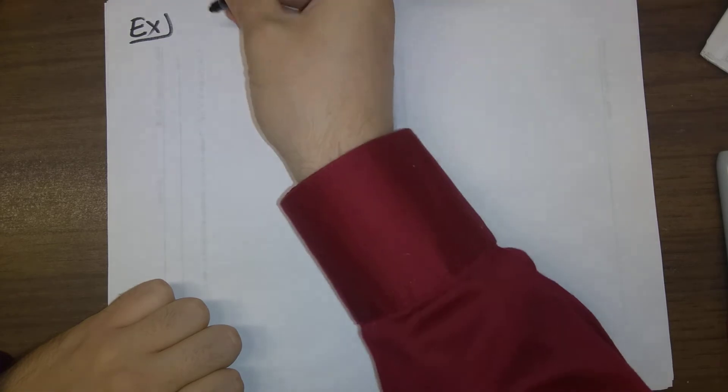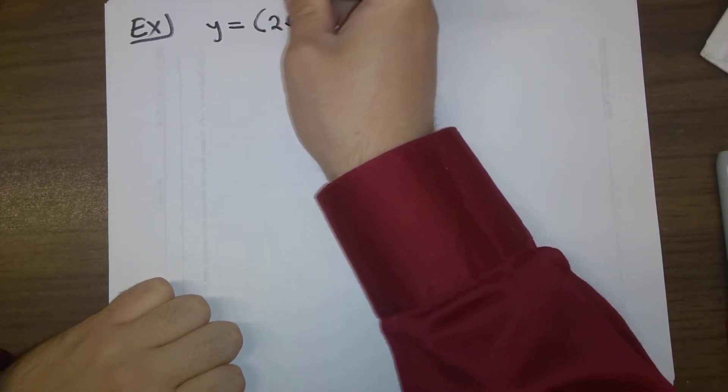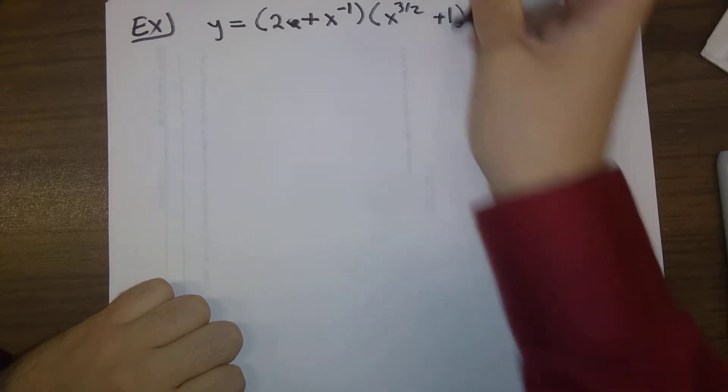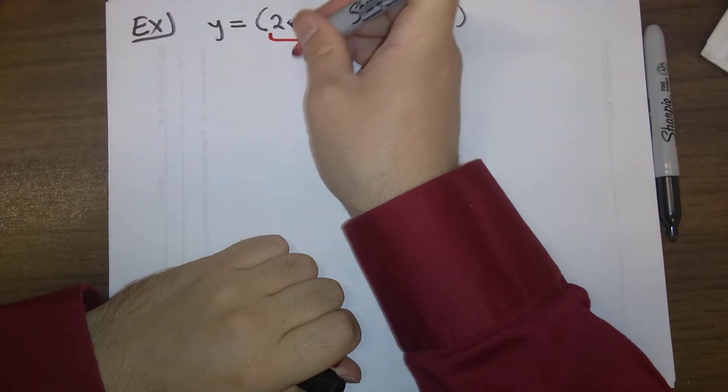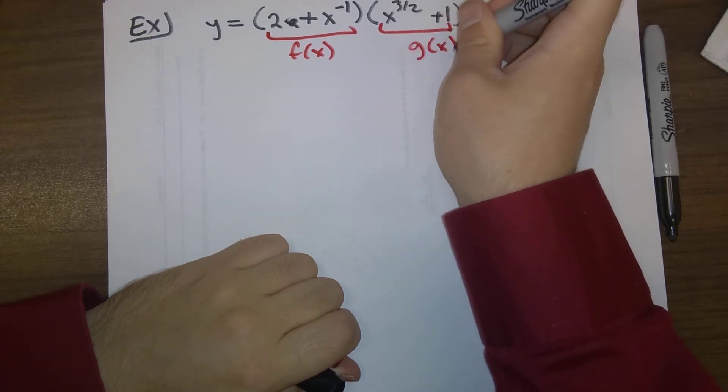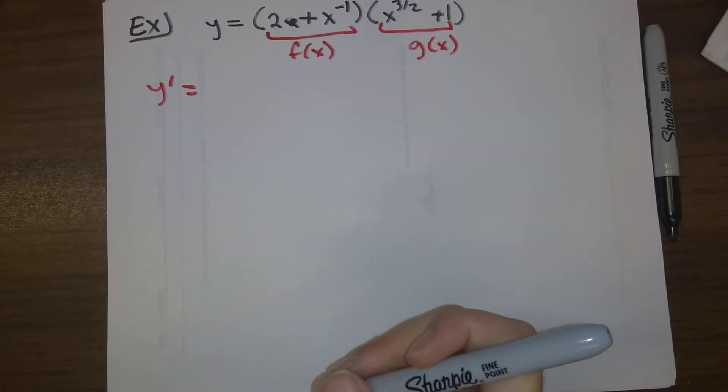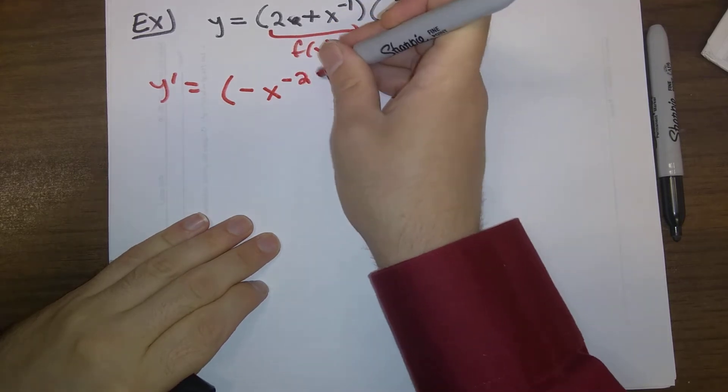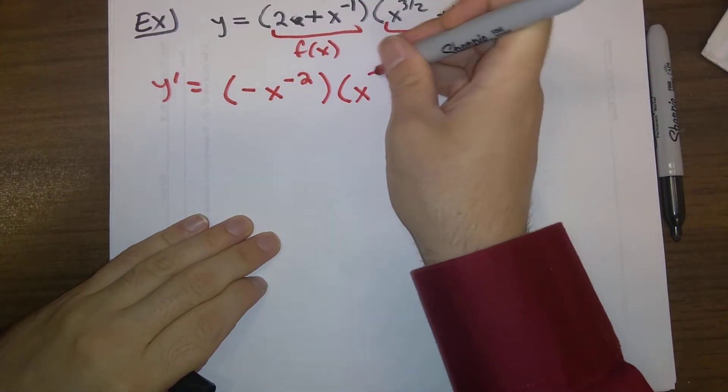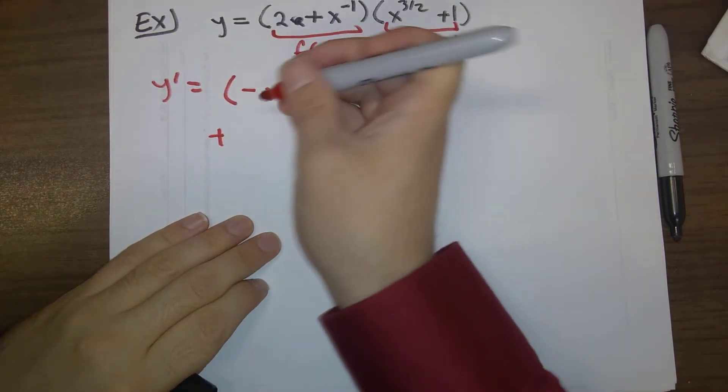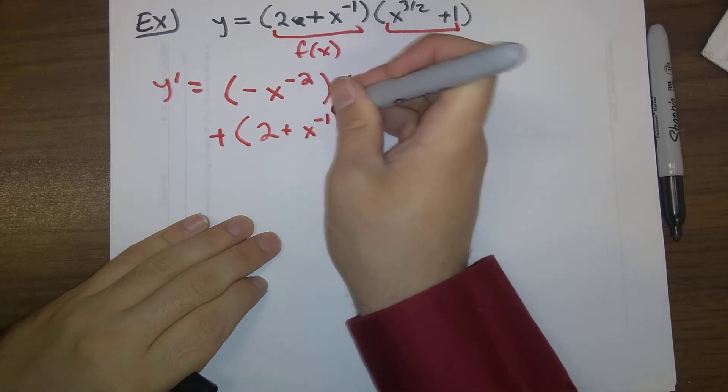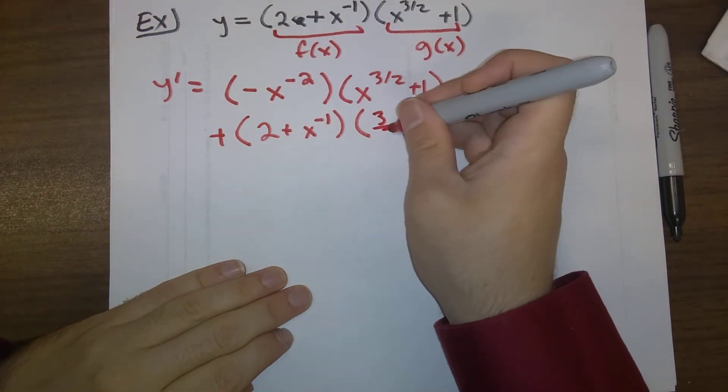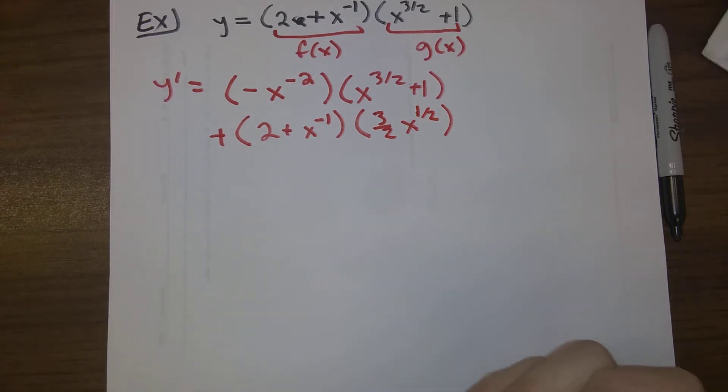Suppose that we have y equals (2 + x^(-1)) times (x^(3/2) + 1). Here's our f(x), here is our g(x). So y' is the derivative of f(x), which is -x^(-2) times g(x), (x^(3/2) + 1), plus we leave f(x) alone, (2 + x^(-1)) times the derivative of g(x), which is (3/2)x^(1/2). And so there is your derivative.